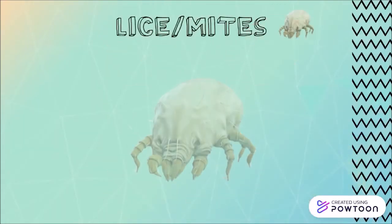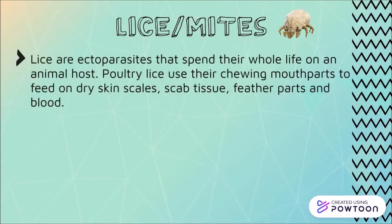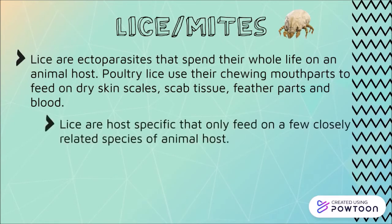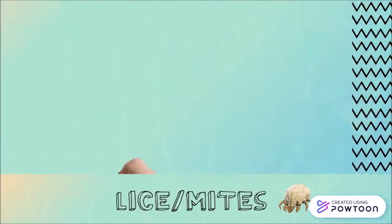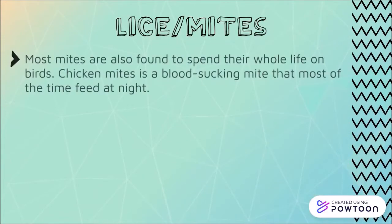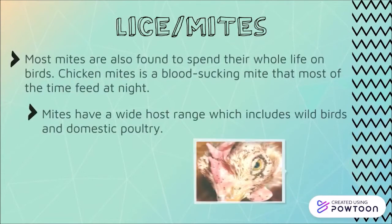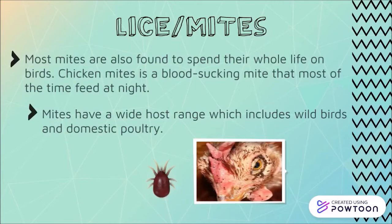The next factor on the list would be lice and mites. Poultry lice use their chewing mouthparts to feed on dry skin scales, scab tissues, feather parts, and blood. Lice are host-specific and they only feed on a few closely related species of the animal host. Chicken mites are blood-sucking mites that most of the time feed at night. They have a wide host range which includes wild birds and domestic poultry.